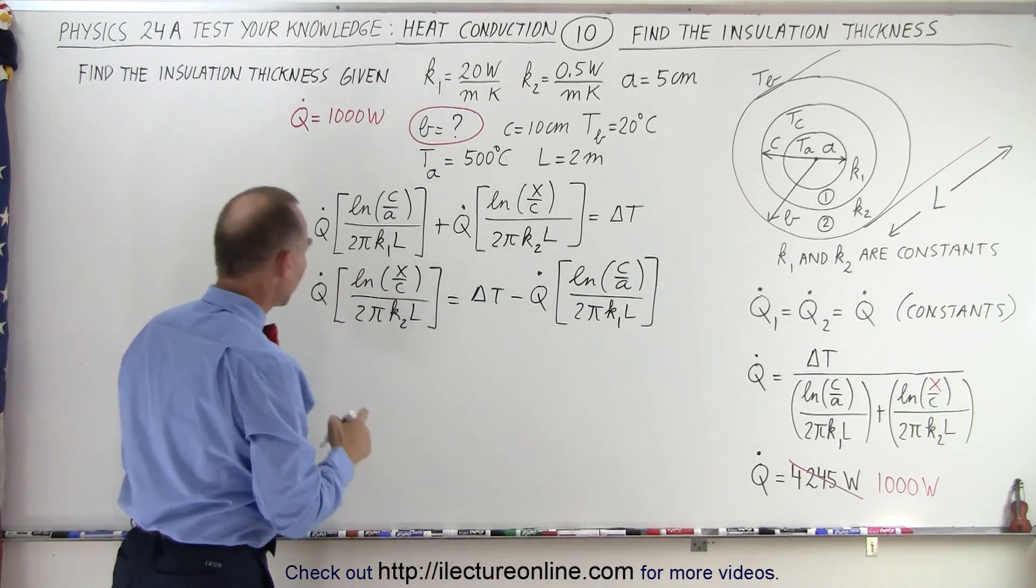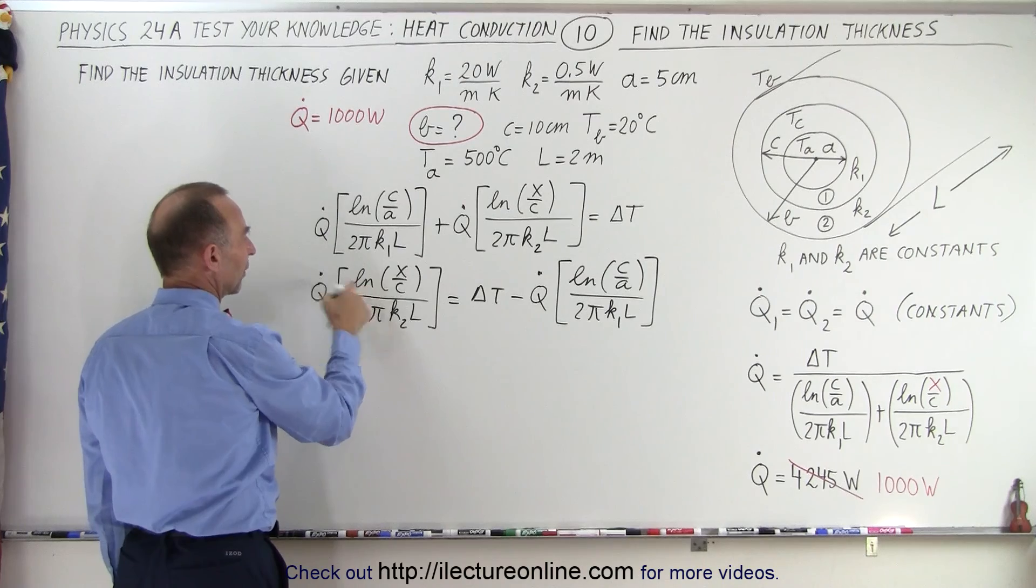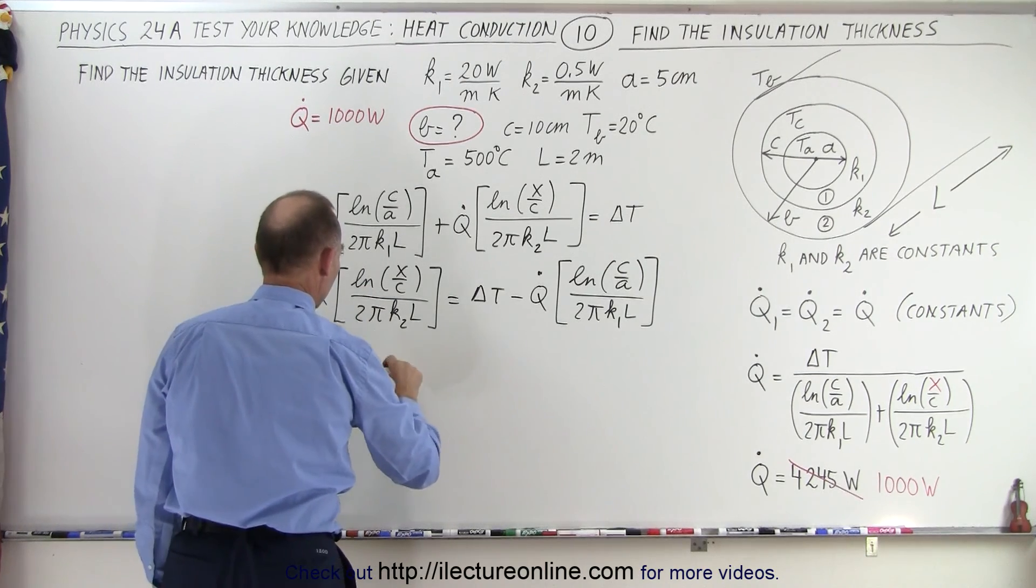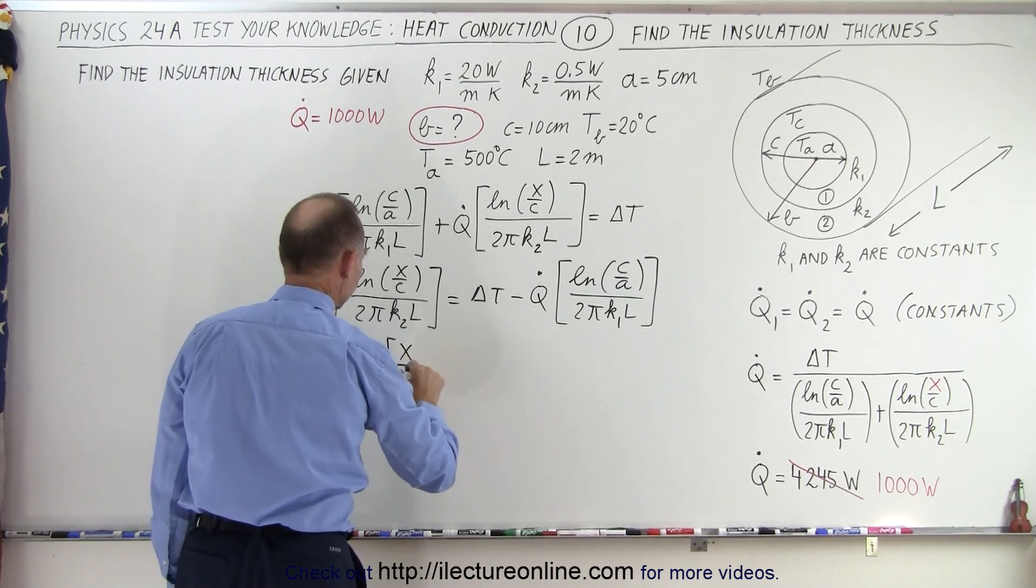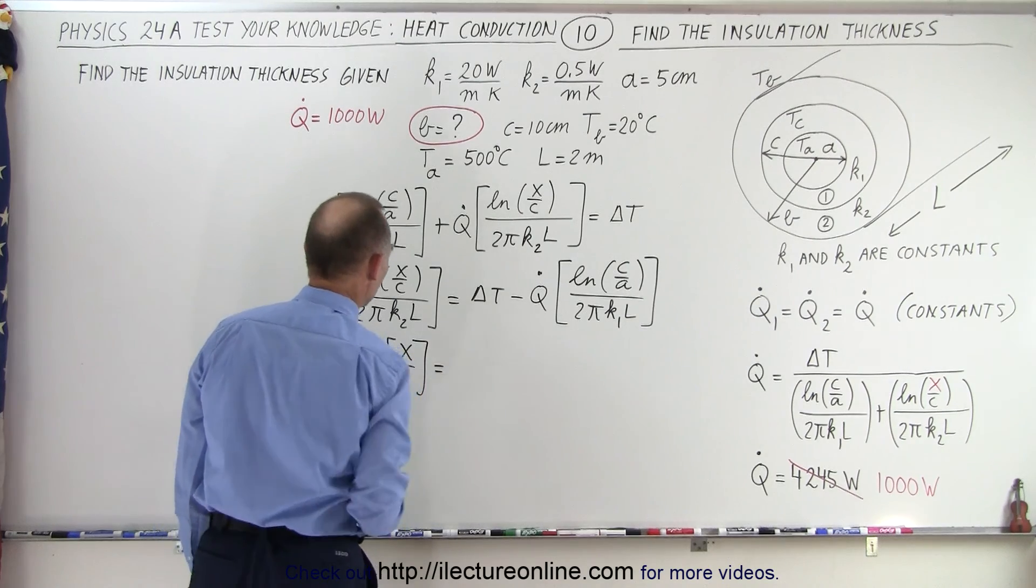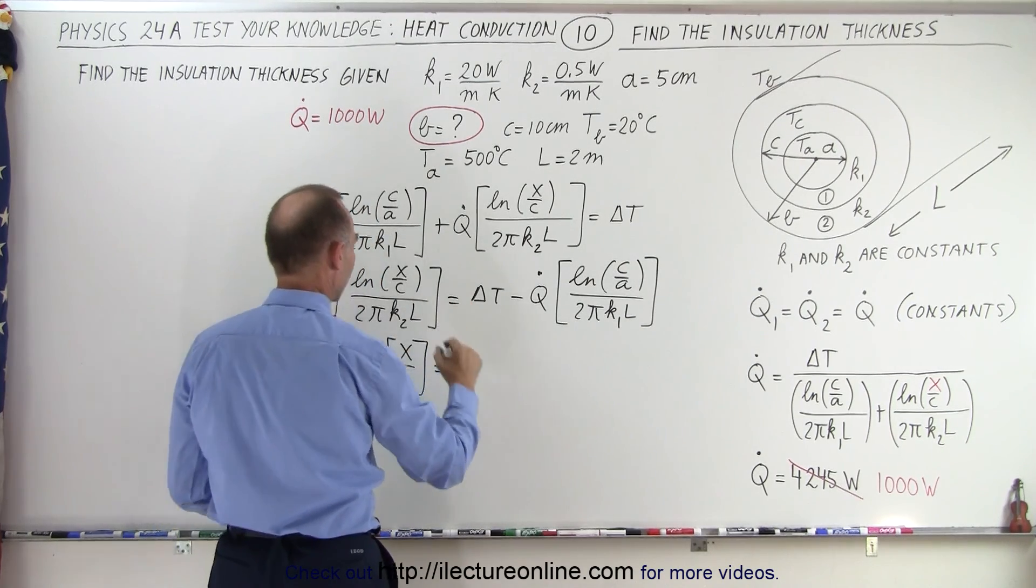And finally, we need to solve this to the natural log of x over c. So the natural log of x over c is equal to multiplying this across.